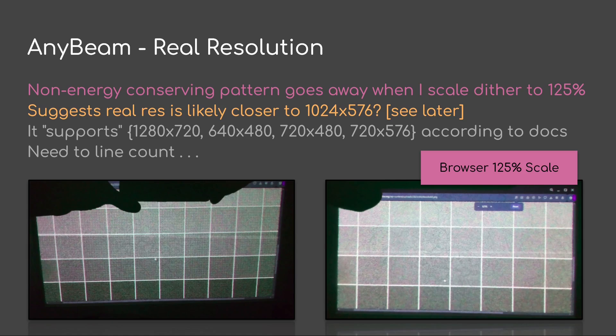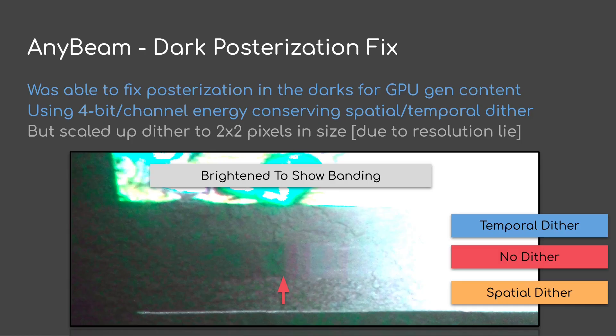That may not be true, but the device says it supports 720p, 480p, and 576. However, we're going to need a line count to actually get a verification. Another problem is the dark posterization, and I think this is actually a fixable problem. I went into ShaderToy and started playing with dithering. I was able to fix posterization in the darks for GPU-rendered content using a 4-bit-per-channel energy-conserving spatial temporal dither. I had to scale it to dither at 2x2 pixels for the grain size due to the resolution, but once I did that, I actually got some good output.